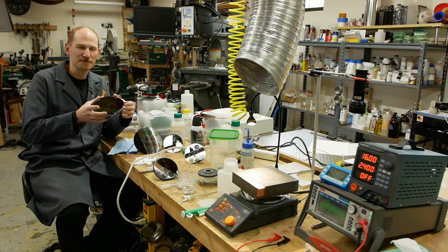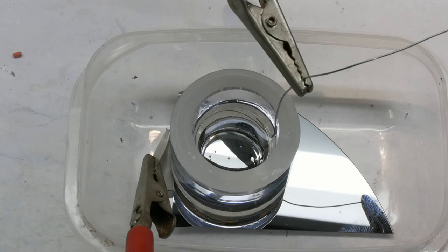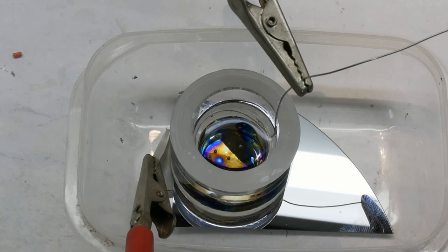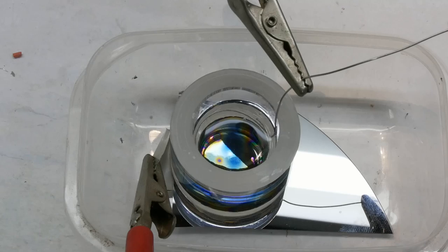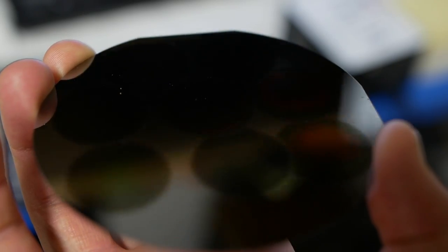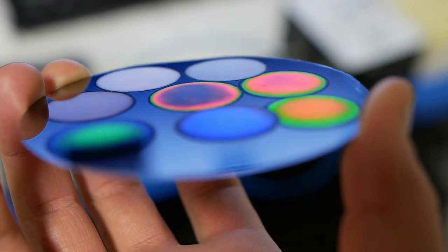Today on Applied Science, I'd like to show you a technique to etch silicon wafers to make optical filters. These are the same wafers that are used to make integrated circuits, but in today's experiment we're going to use an acid bath and an electrical current to make these specialized optical rugate filters.